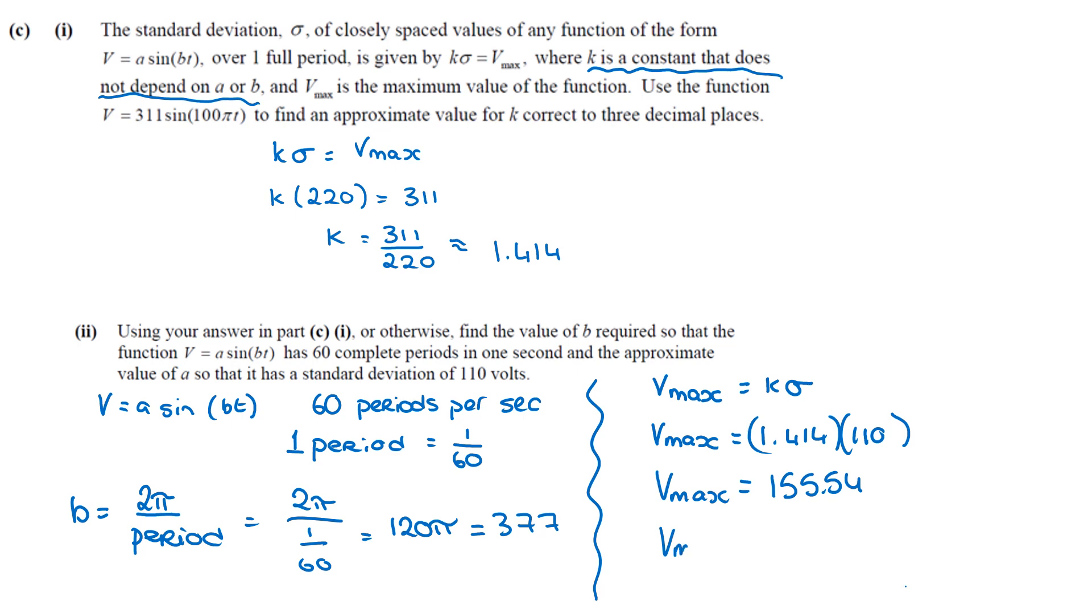For that coefficient we usually leave that in whole number. So it's 156. So we actually get a function which is V is equal to 156 sine of 120 pi T.